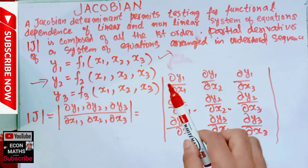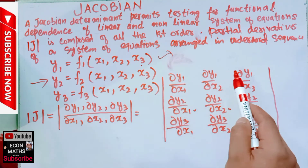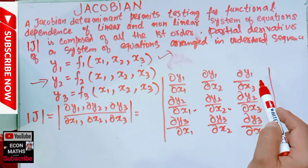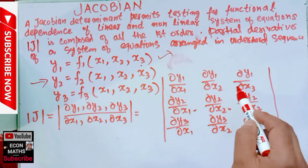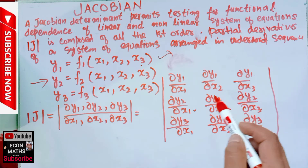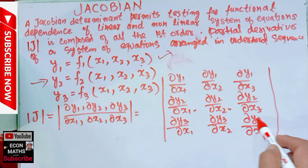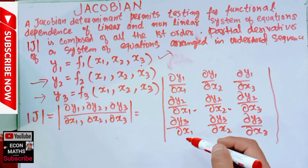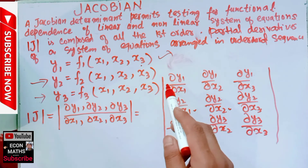We can notice that each row consists of the partial derivatives of one function yi with respect to each of the independent variables x1, x2, and x3. Similarly, the second row is composed of all the partial derivatives of y2, and the third row is composed of the partial derivatives of y3, each with respect to the independent variables x1, x2, and x3.